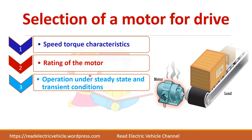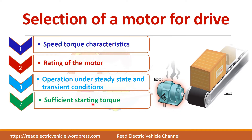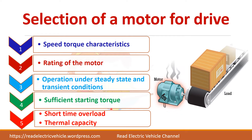The rating of the motor and its operation under steady state as well as transient condition — that is, if you give some disturbance, it should be able to restore its original position. What will be the starting torque? For example, if you take an electric train, it has a high mass, so you need a high starting torque to start the train. And what will be the overload capacity and the thermal capacity of the motor — whether it can withstand temperature rise or not.